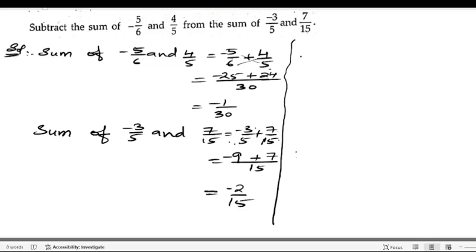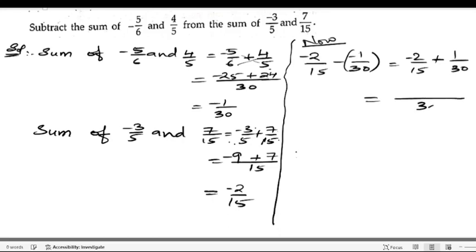Now we can find the difference. From the second sum -2/15, we subtract -1/30. -2/15 minus into minus is plus 1/30. The LCM is 30. 15×2 are 30, so 2×2 are 4, giving -4/30. Plus 1/30 gives -3/30. Simplifying: 3×1 are 3, 3×10 are 30, so we get -1/10.